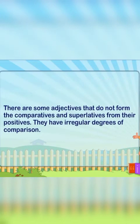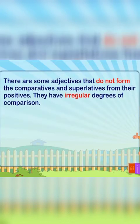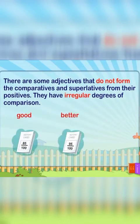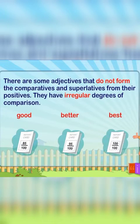There are some adjectives that do not form the comparative and superlative from their positives. They have irregular degrees of comparison. For example: good, better, best.